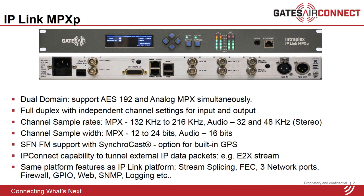There is also optional IP Connect capability, which will allow external IP data packets to be tunneled through the codec across the wide area IP networks. For example, in HD Radio applications, the user can tunnel the E2X stream from the studio end using the codec across the wide area IP network to leverage the network reliability methods of IP-Link MPX, protecting the E2X stream from packet losses.